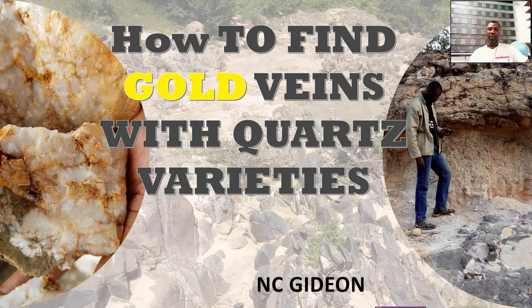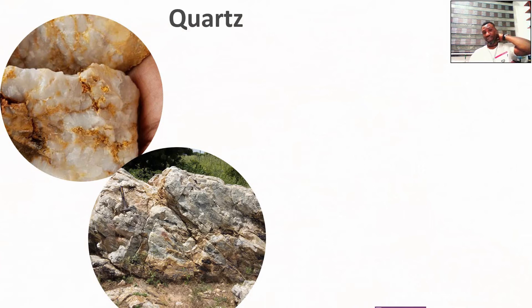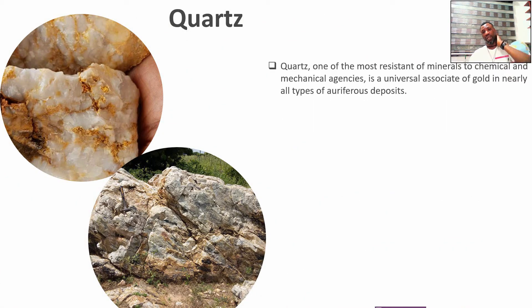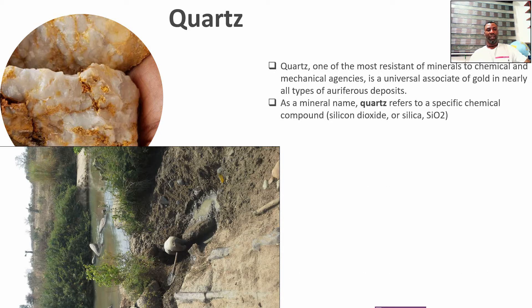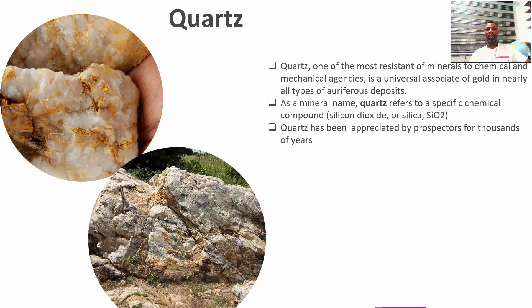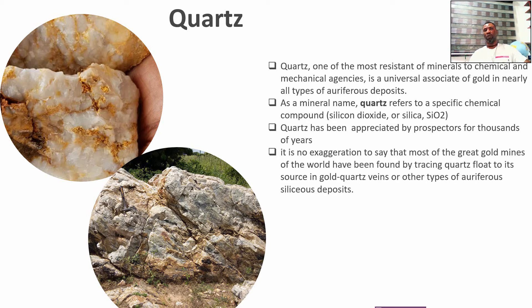Quartz is one of the most resistant minerals we have and they are very abundant. It is universally associated with gold. As a mineral name, quartz refers to a specific chemical compound — silica dioxide, or SiO2. It is one of the clues that is actually used to find gold in most terrains.